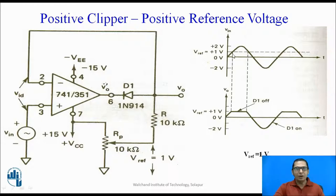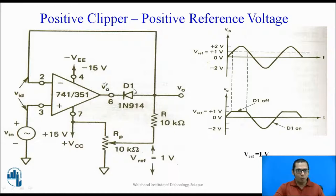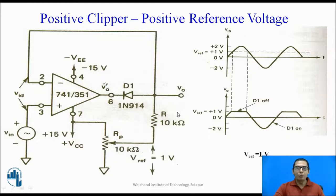As long as the non-inverting input is less than one volt, output equals input. As soon as the voltage at the non-inverting terminal goes just above one volt, the output of the op-amp becomes positive, which turns diode D1 off — it acts as an open circuit. When the diode is open, there is no feedback path, and the output V0 is simply equal to the reference voltage. So for that portion, the diode is off and output equals reference voltage.